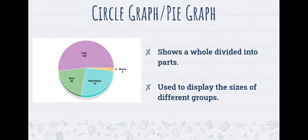Next we have a circle graph or a pie graph. This is going to show a whole divided into different parts. For this graph right here we look at different modes of transportation and what people use the most of. This is used to display the sizes of different groups and give us an idea of what has the majority or what is more popular.